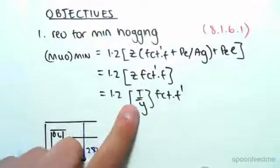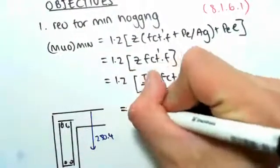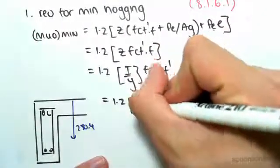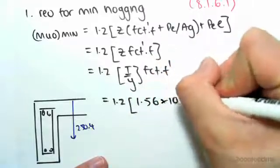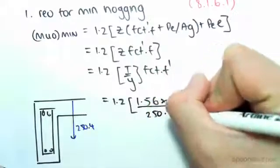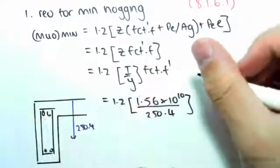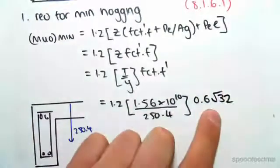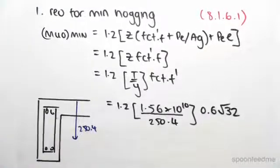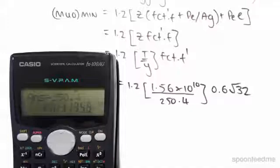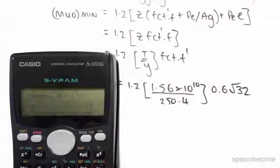The formula is the same for minimum hogging and sagging — the only difference is the value we substitute for y. So this equals 1.2 times I over y, times fct.f'. The I value was found in previous videos to be 1.56 × 10¹⁰, y is 250.4, and fct.f' is 0.6 × √32. Working this out: 1.56 × 10¹⁰ divided by 250.4, times 1.2 × 0.6 × √32, gives us approximately: